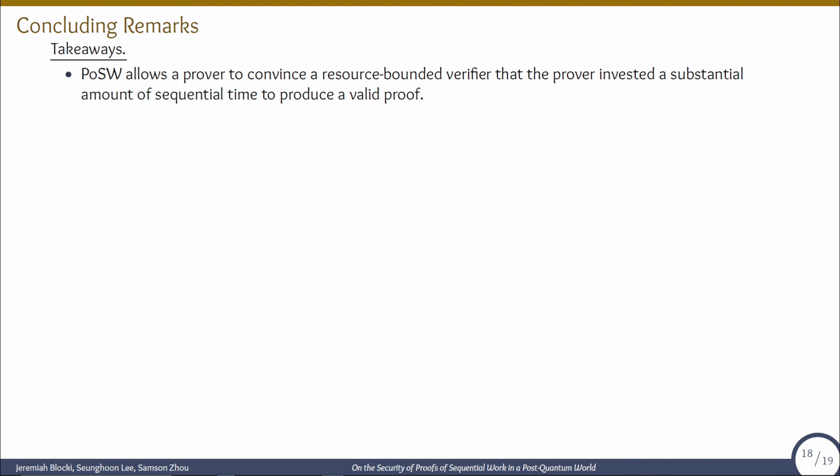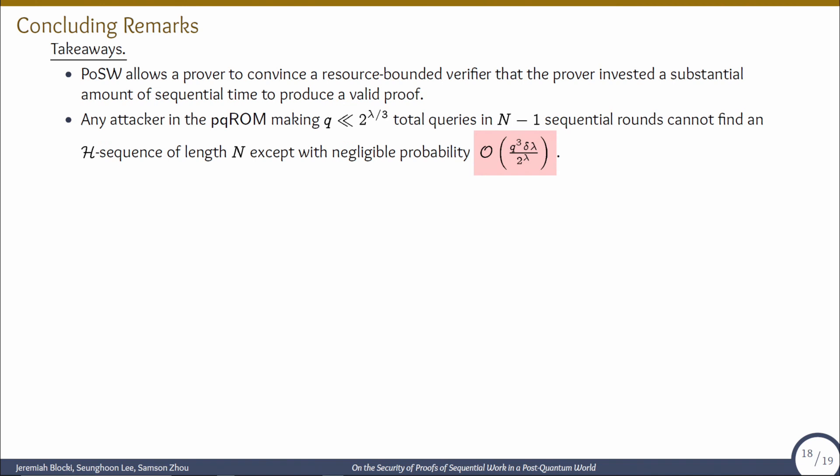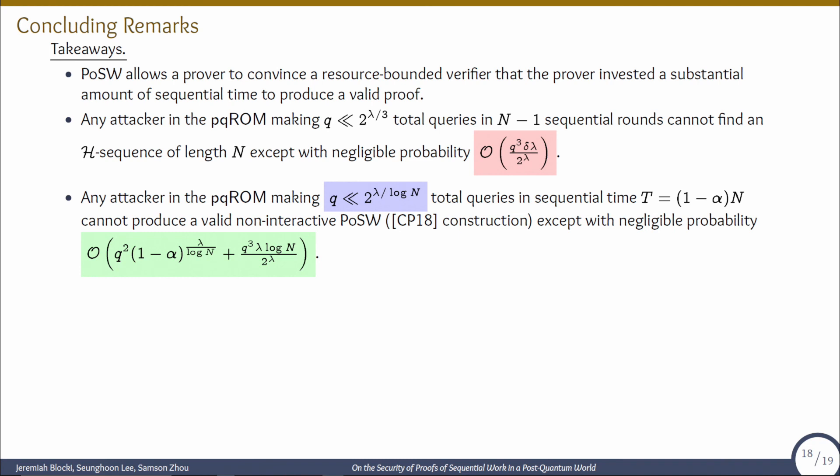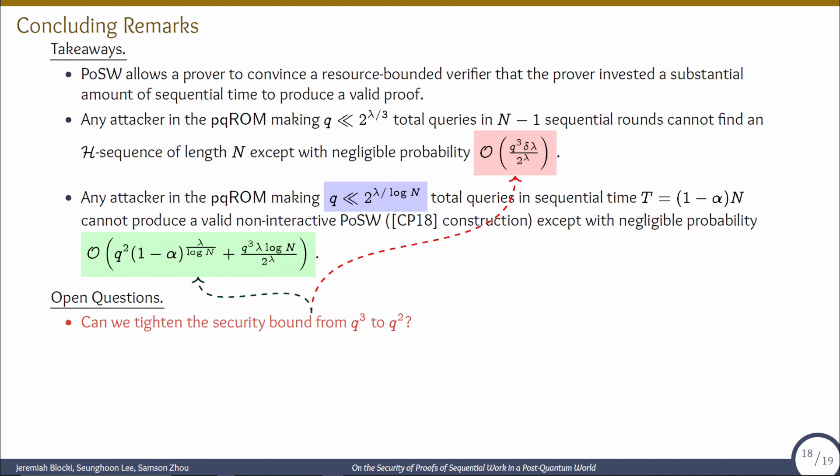Let me wrap up the talk. Proof of sequential work allows a prover to convince a resource-bounded verifier—a professor with a small laptop—that the prover invested a substantial amount of sequential time to produce a valid proof, so that students cannot fool the professor. We showed that any parallel quantum random oracle attacker running in time less than N cannot produce an H sequence of length N except with negligible probability, and cannot produce a valid non-interactive proof of sequential work except with negligible probability.